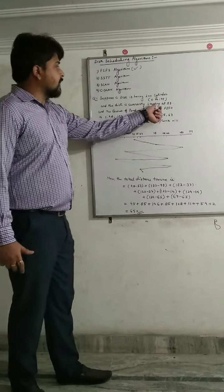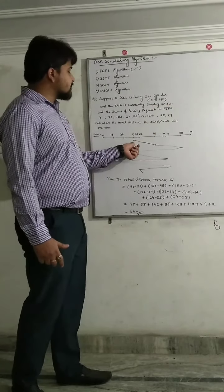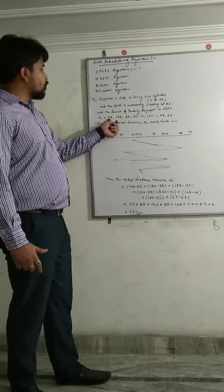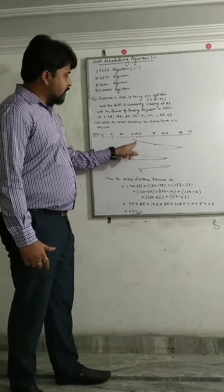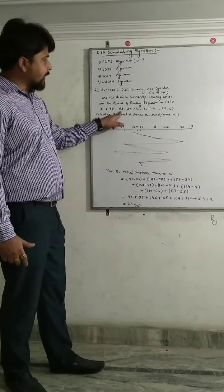First of all, starting location is 53. So we start from 53 and the next job is 98. So we draw a line up to 98.